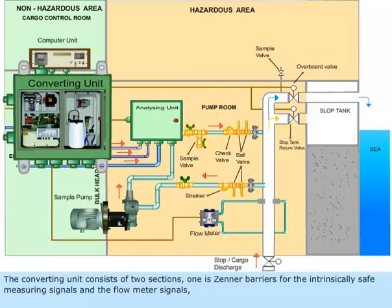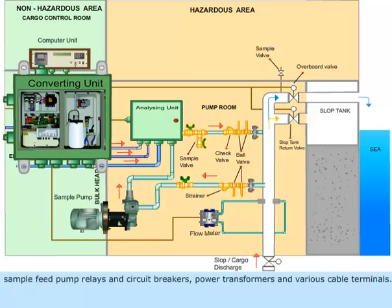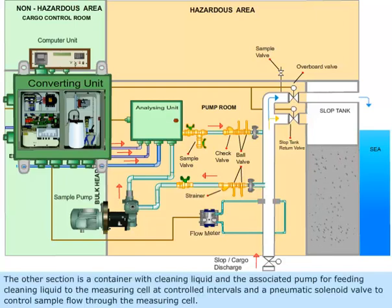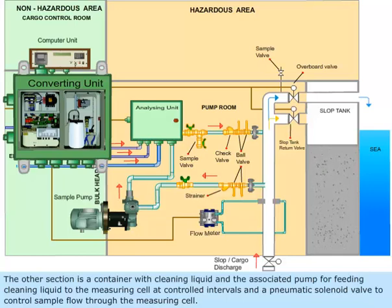The converting unit consists of two sections. One section contains Zener barriers for the intrinsically safe measuring signals and the flow meter signals, sample feed pump relays and circuit breakers, power transformers, and various cable terminals. The other section contains a container with cleaning liquid and the associated pump for feeding cleaning liquid to the measuring cell at controlled intervals, and a pneumatic solenoid valve to control sample flow through the measuring cell.